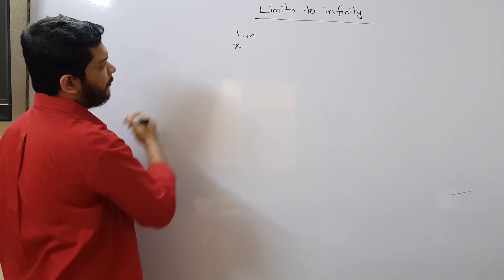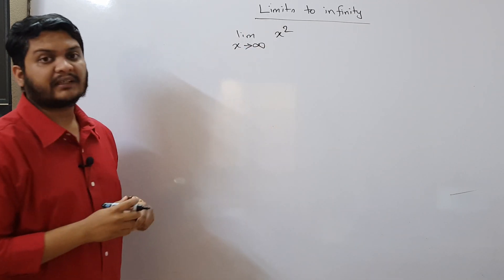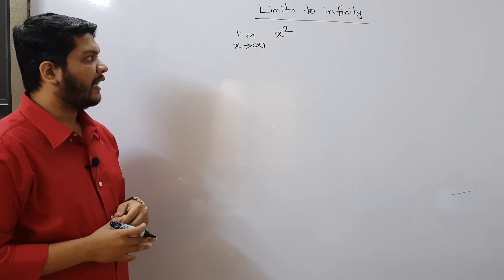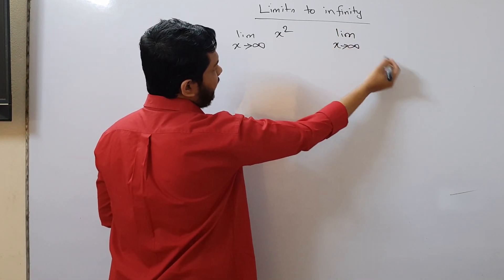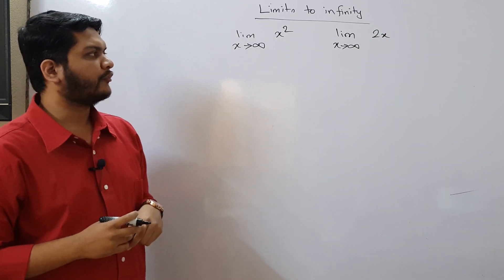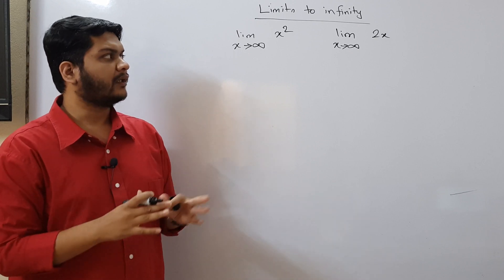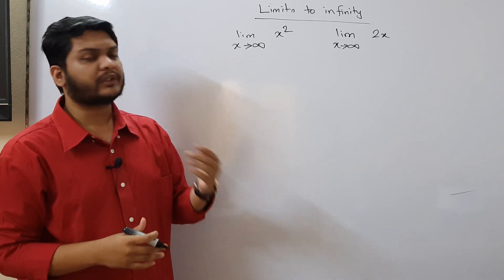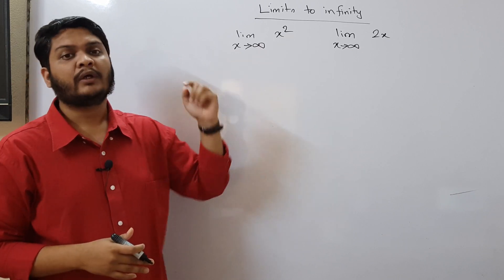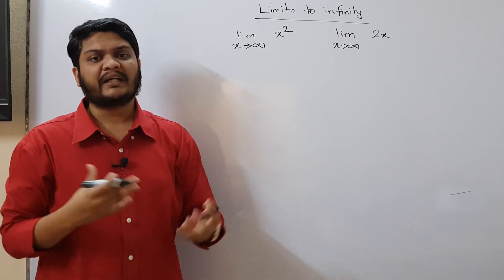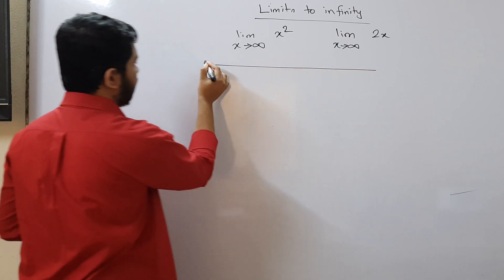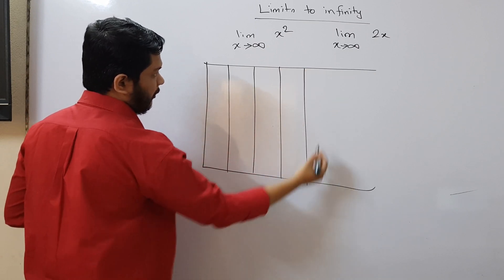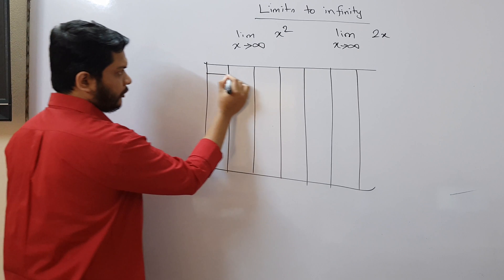Let's take an example where we have limit x tends to infinity and we have a function x squared. We need to calculate what this value will be. Let's also consider another case: limit x tends to infinity of 2x, and another function minus 2x, or minus x squared. We will see what happens when the variable tends to positive infinity or negative infinity, and for a better understanding we will make a table.